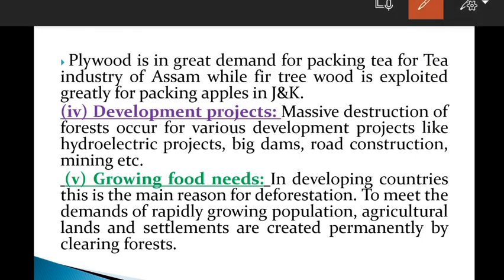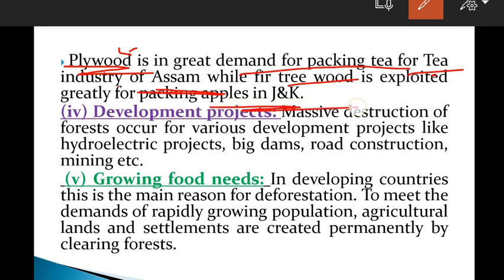Plywood is in great demand for packing tea in the tea industries of Assam. Similarly, firewood is exploited greatly for packing apples in Jammu and Kashmir. These industrial demands are also causes of deforestation.